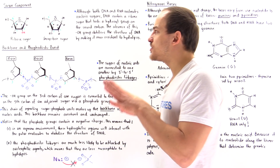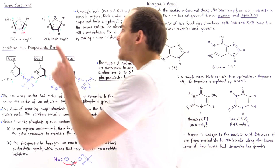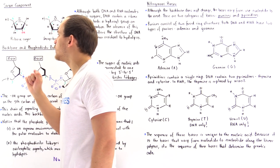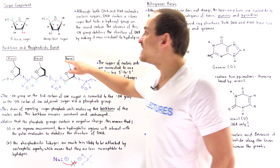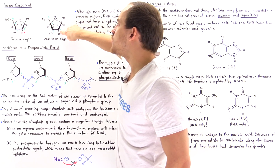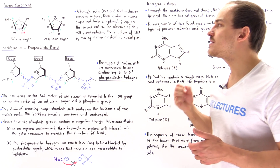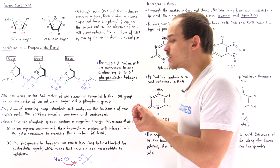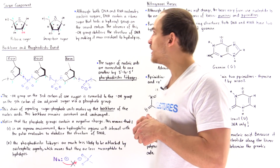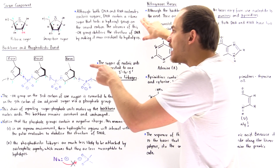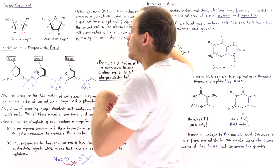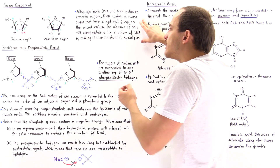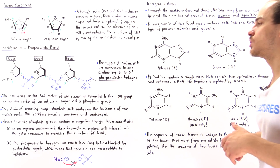The only difference between these two sugars is that on the ribosugar, we have a hydroxyl group attached to carbon number two. But in the deoxyribosugar, 'deoxy' means we don't have that hydroxyl group attached to the second carbon. So although both DNA and RNA contain sugar components in their nucleotides, DNA contains a deoxyribosugar — a ribosugar that simply does not have a hydroxyl group attached to that second carbon.